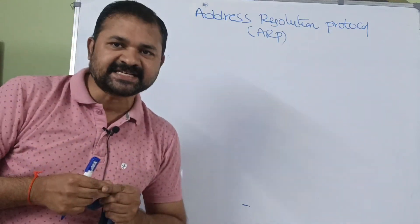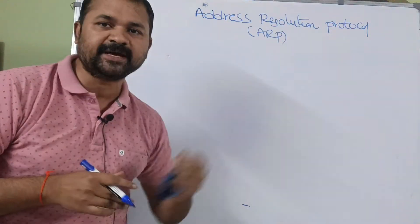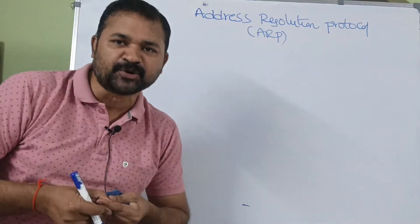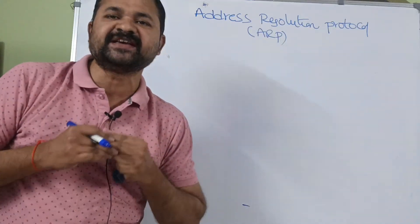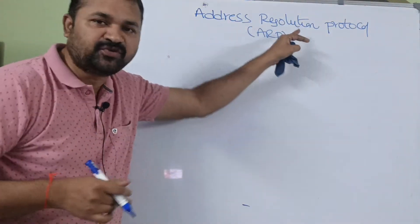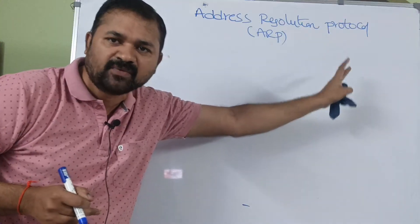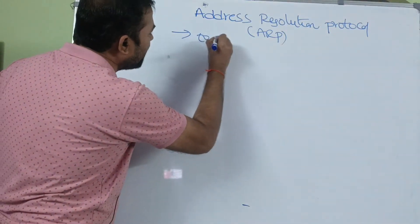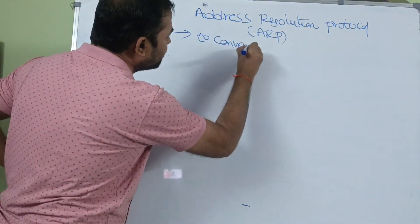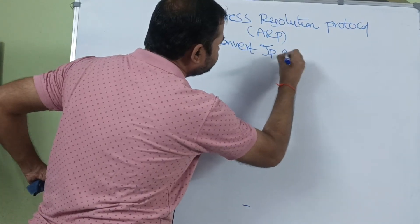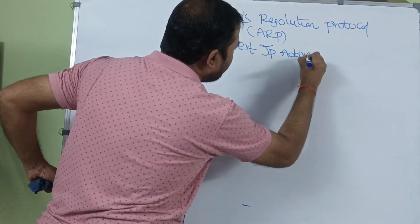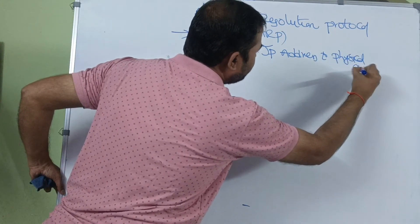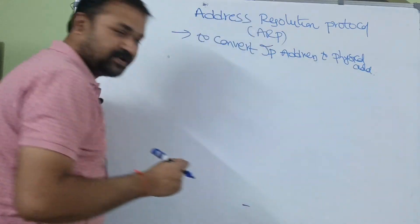Let us discuss about ARP. ARP stands for Address Resolution Protocol. The name itself specifies the meaning — it is mainly useful in order to resolve addresses. ARP is mainly useful in order to convert an IP address to a physical address.